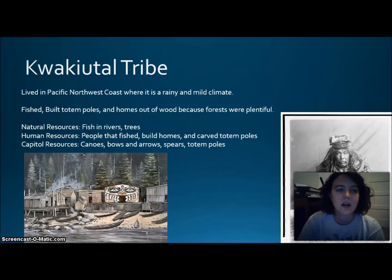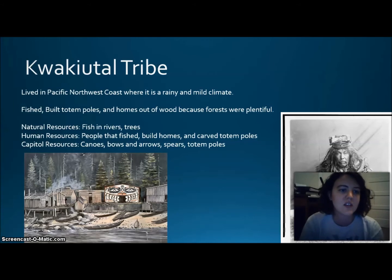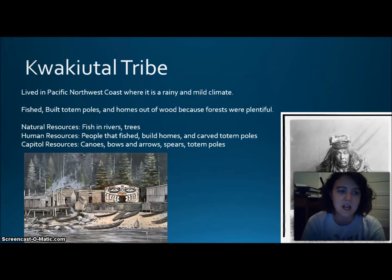The Kwakiutl tribe lived on the Pacific Northwest coast, where it was rainy and mild. They fished and built totem poles and homes out of wood because forests were plentiful. Natural resources were the fishing rivers and trees. Human resources were people who fished, built homes, and carved totem poles. Capital resources were canoes, bows and arrows, spears, and totem poles.